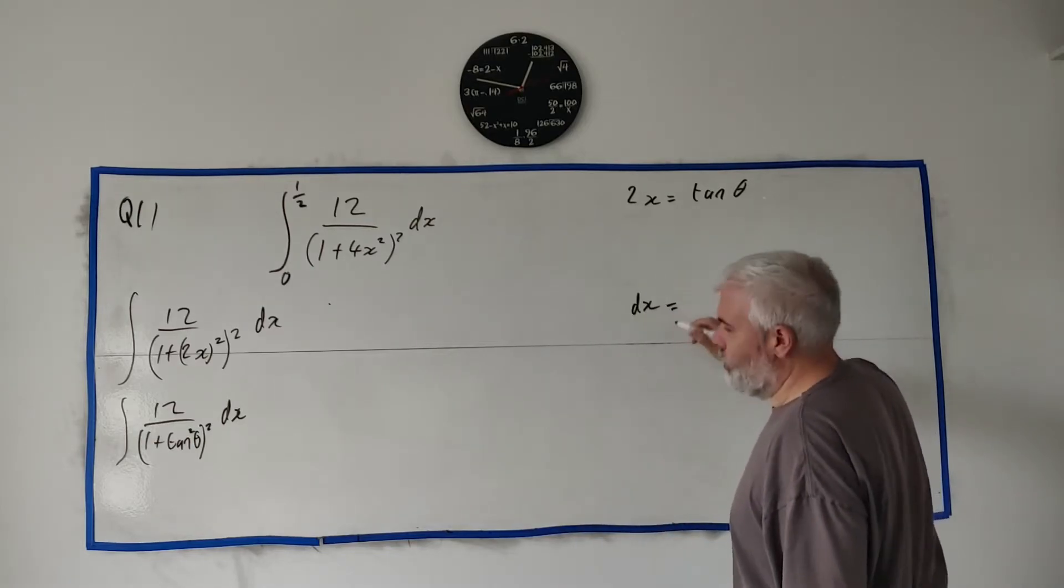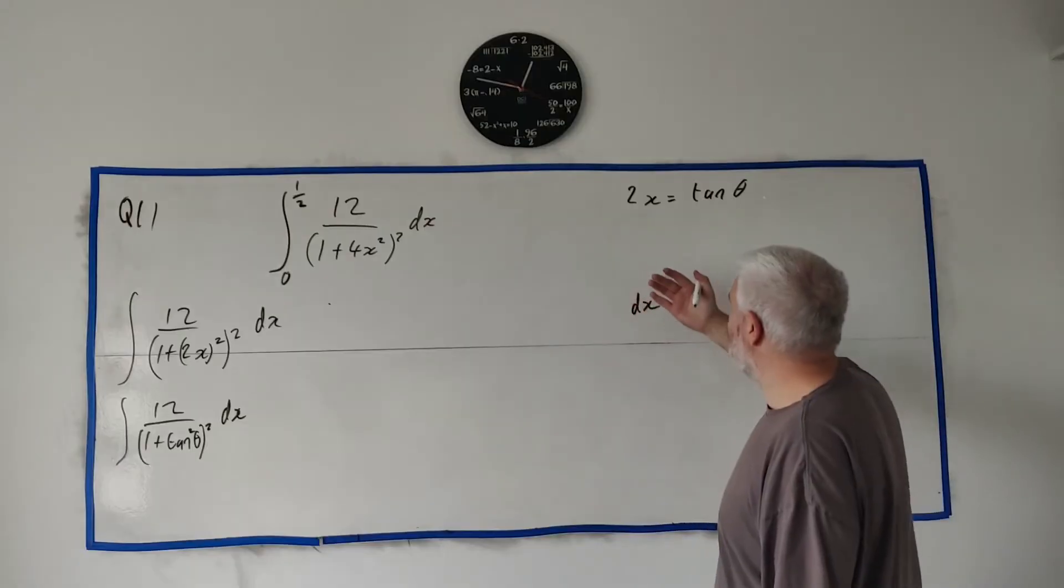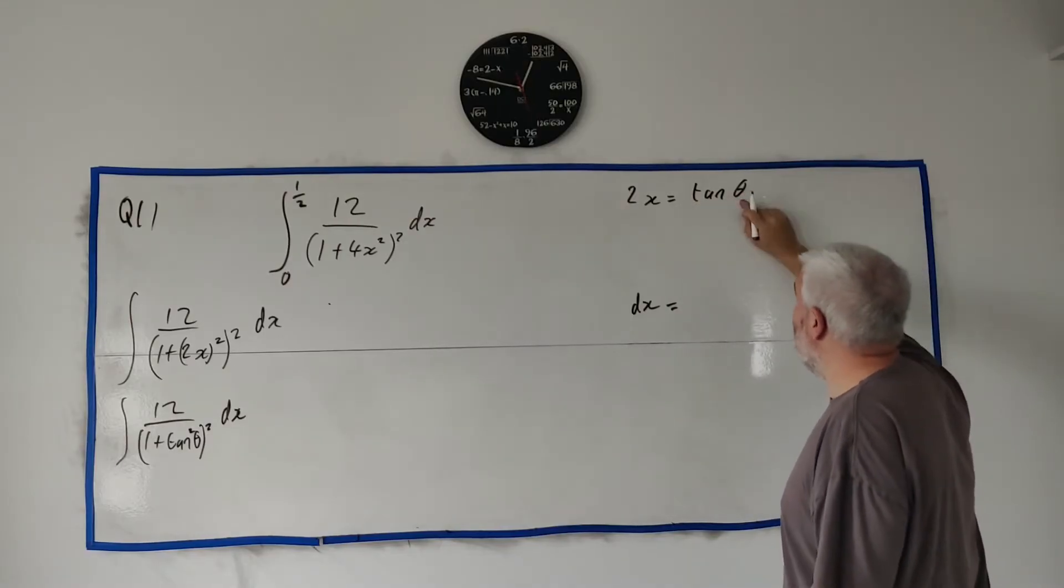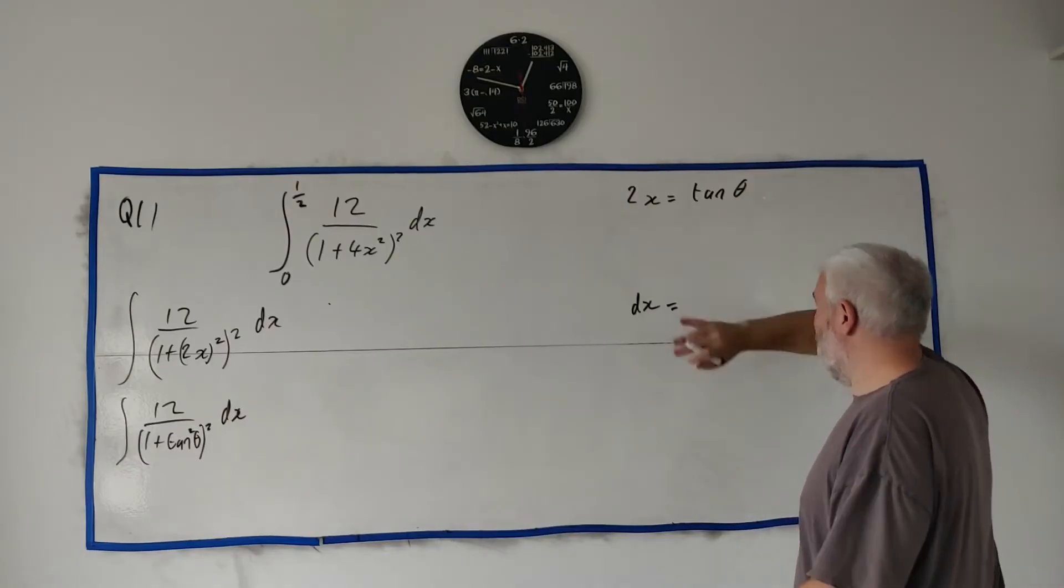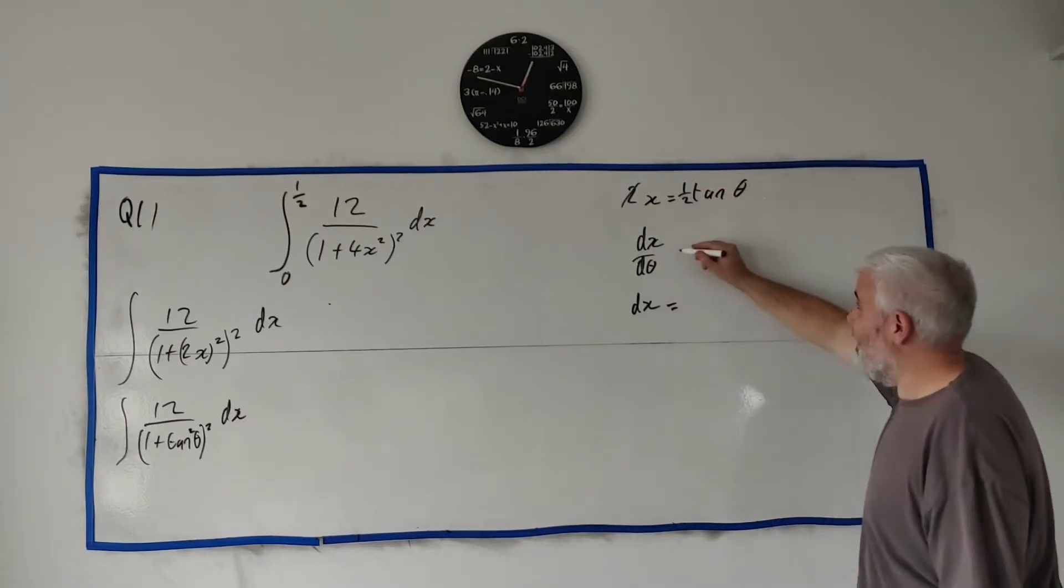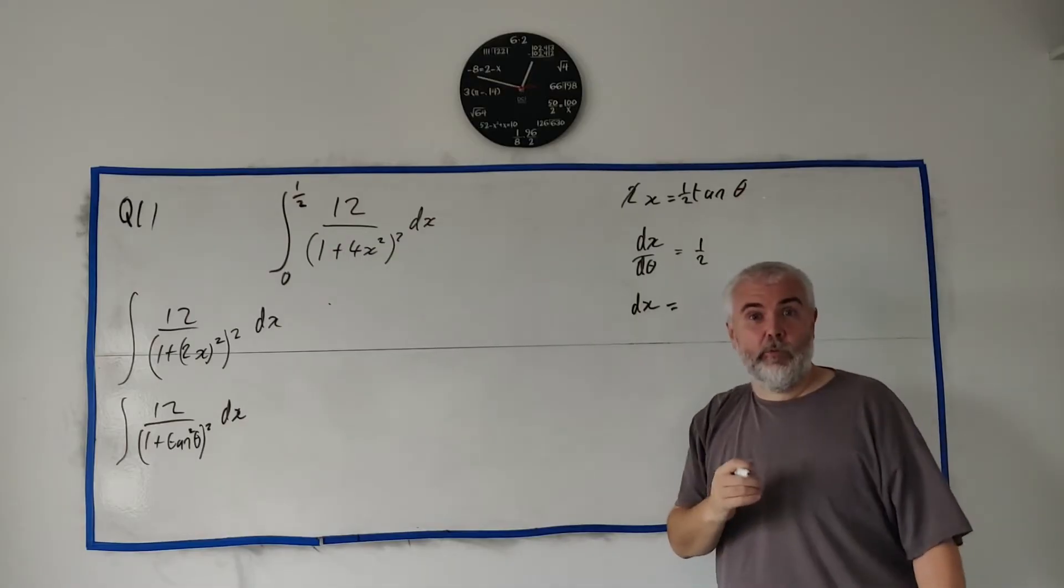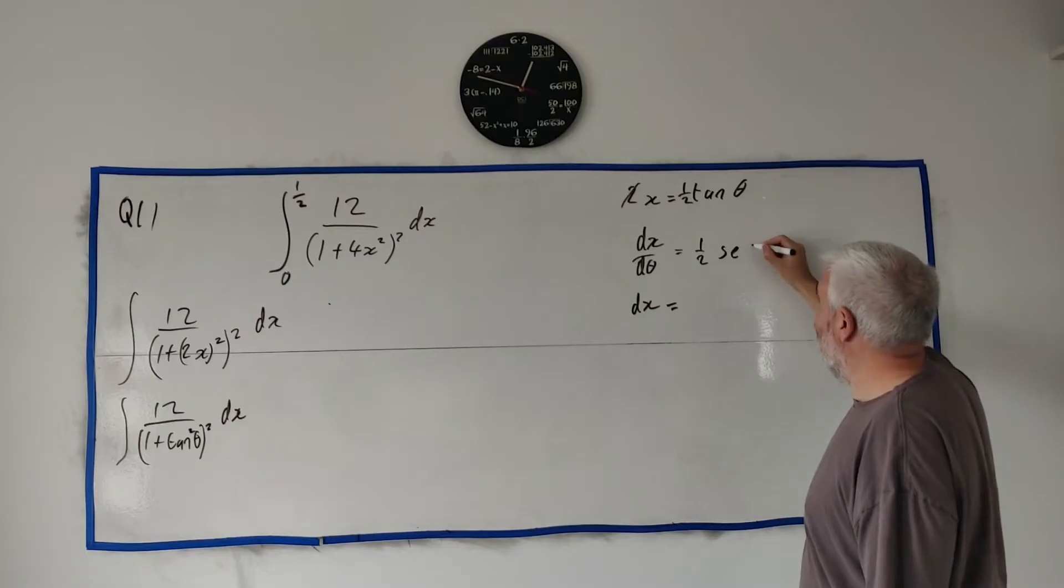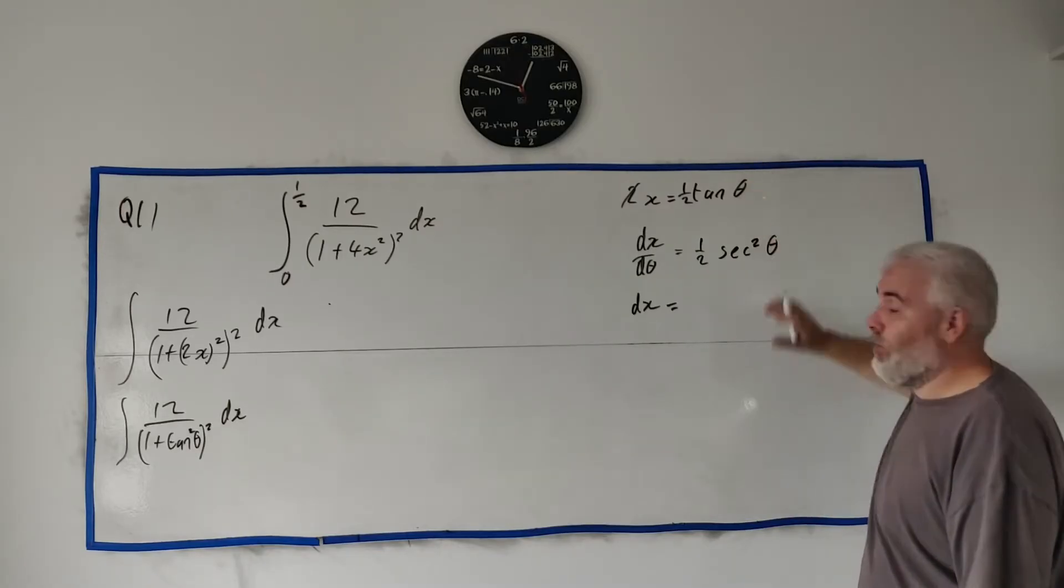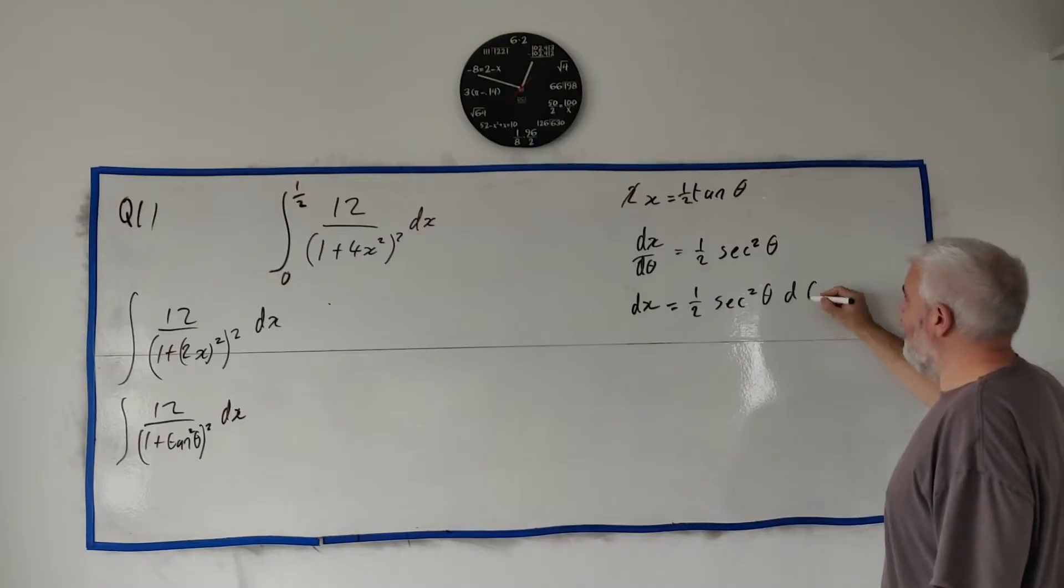The problem we have here is we have θ in this and a dx out here, so we need to fix that. This is standard when we substitute - we find dx by differentiating. The easiest way is to divide two across: this becomes x = ½ tan θ. The derivative of tan θ - we just look this up - is sec² θ. So that's our first lookup into the formula. We're left with dx = ½ sec² θ dθ, so we'll replace that in.